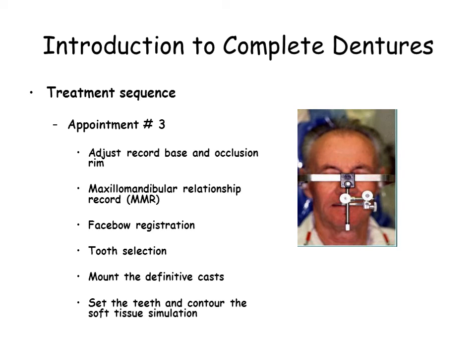At the third appointment, you will adjust the record base occlusion rim to fit the patient. You will acquire the MMR and face bow registration. At this time, you will determine a tooth form and shape appropriate for the patient. In the laboratory, you will mount the definitive casts, set the teeth, and contour the soft tissue simulation.